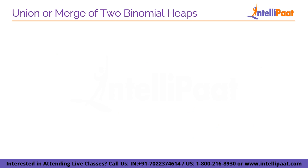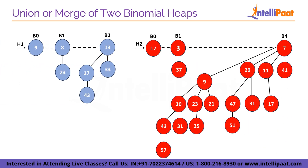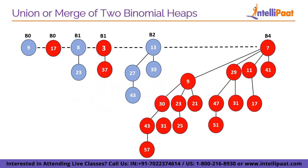Moving forward, we will see another operation: union or merging of two binomial heaps. This is one of the most important operations. Here we have two binomial heaps H1 and H2. In H1 we have trees of degrees B0, B1, and B2. In H2 we have B0, B1, and B4. Both heaps are valid as the order of degree is increasing. Now we will merge these two heaps. Simply combining them gives degrees 0, 0, 1, 1, 2, and 4 — this is not a valid binomial heap since the order of degree must be increasing with no repeats. So we will merge in such a way that it becomes a valid binomial heap.